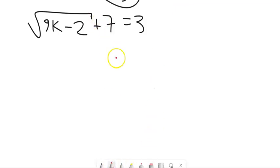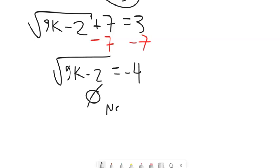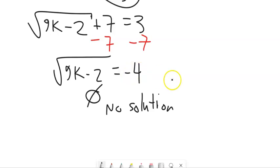I'm going to do one more like this. Subtract that 7 from both sides to get that square root all alone so I can think about squaring it. Oh — square root is equal to a negative. I'm not even going to waste my time. No solution. You can write empty set or you can say no solution, because the square root will never spit out a negative number.